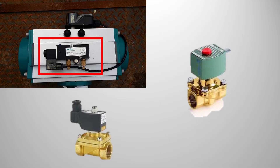A solenoid valve does not throttle any process fluid into the system. It either allows the process flow into the system or shuts off the process fluid going into the system. The solenoid valve has two basic components: the solenoid valve head and the body. In the head you have the coil and the electrical systems, whereas in the body you have the plunger and spring arrangement.